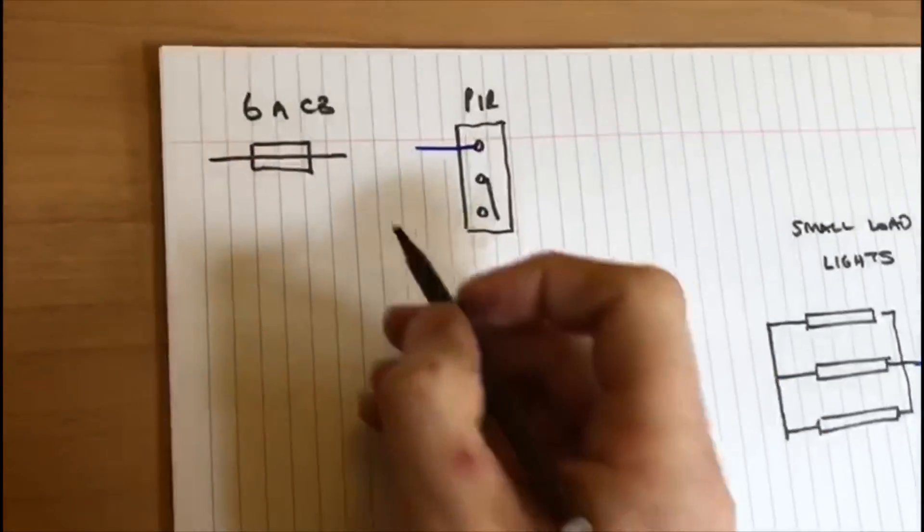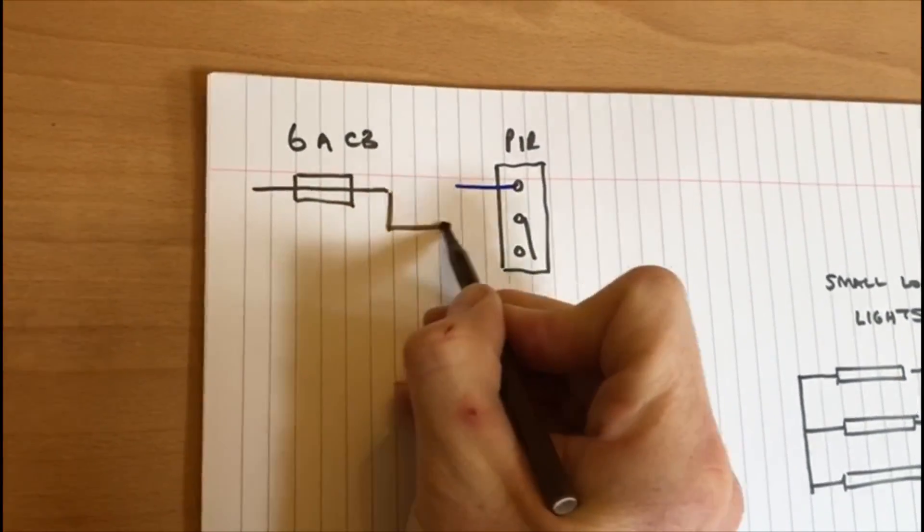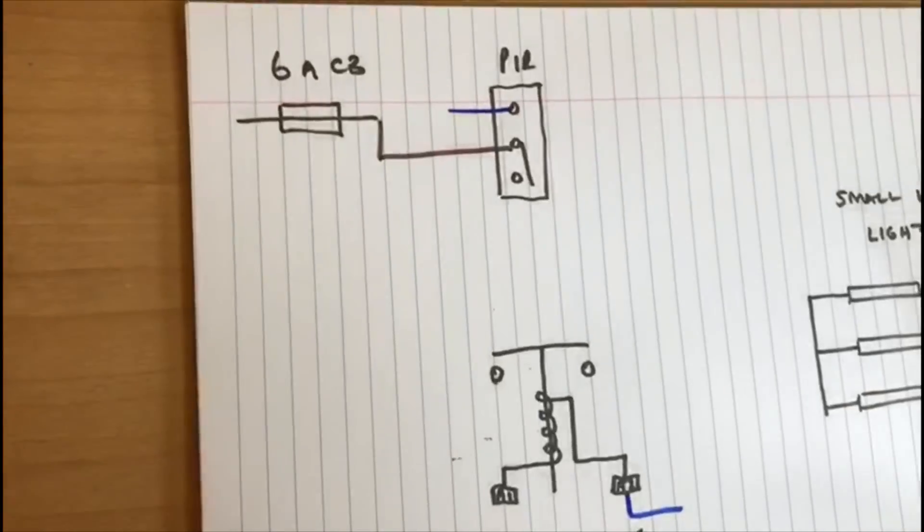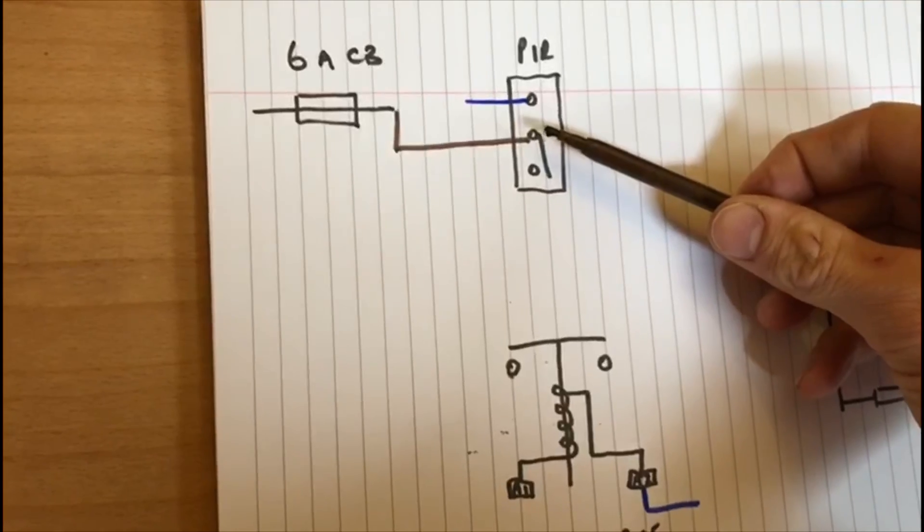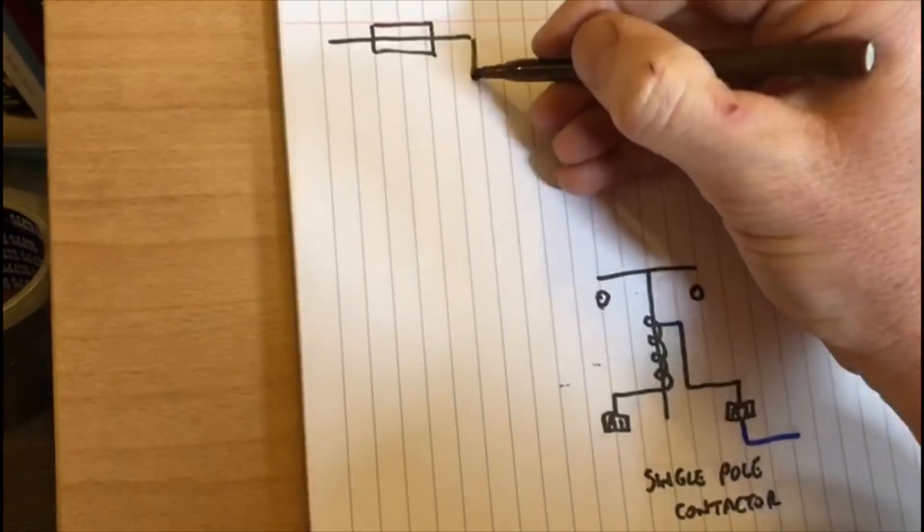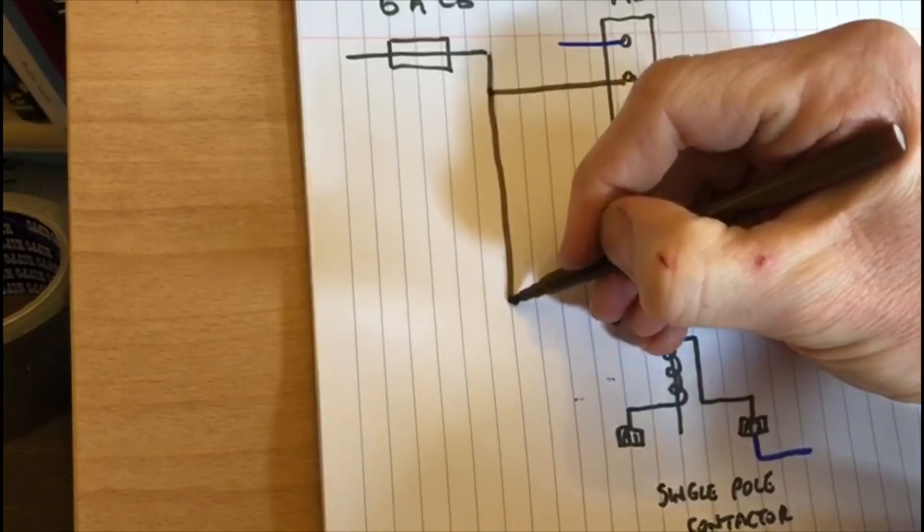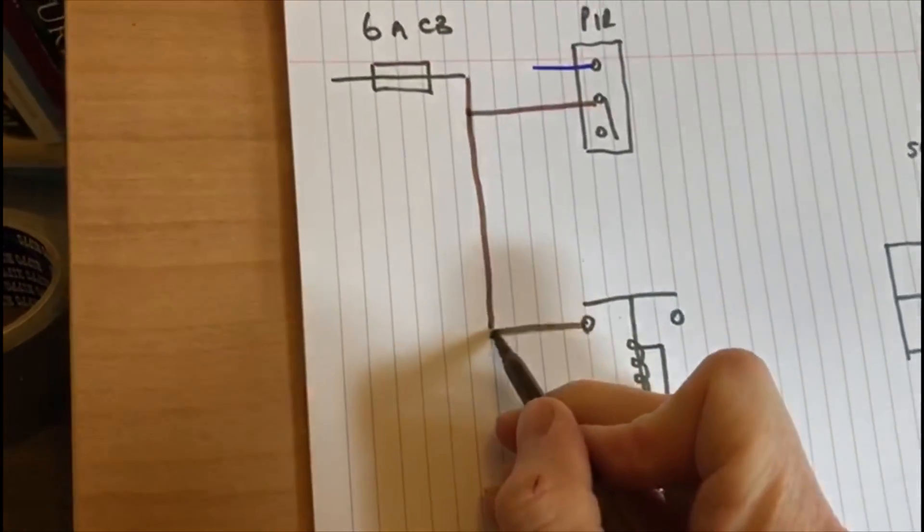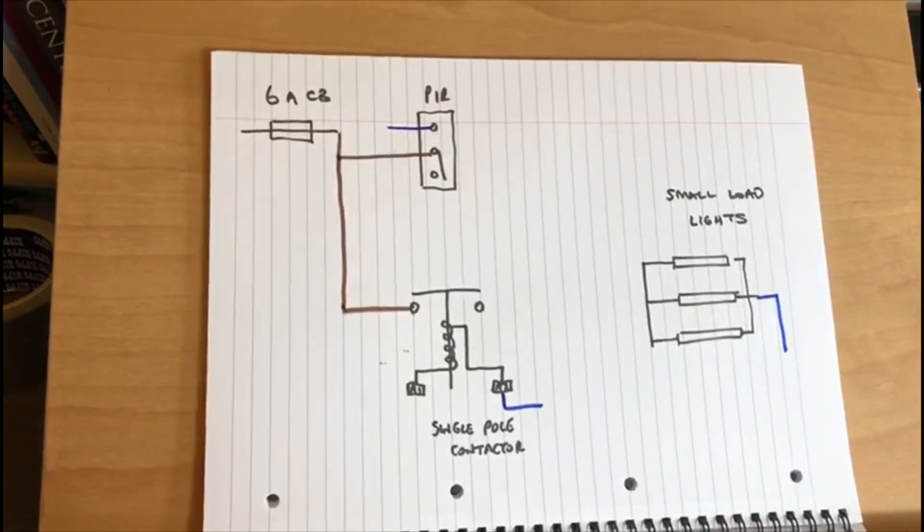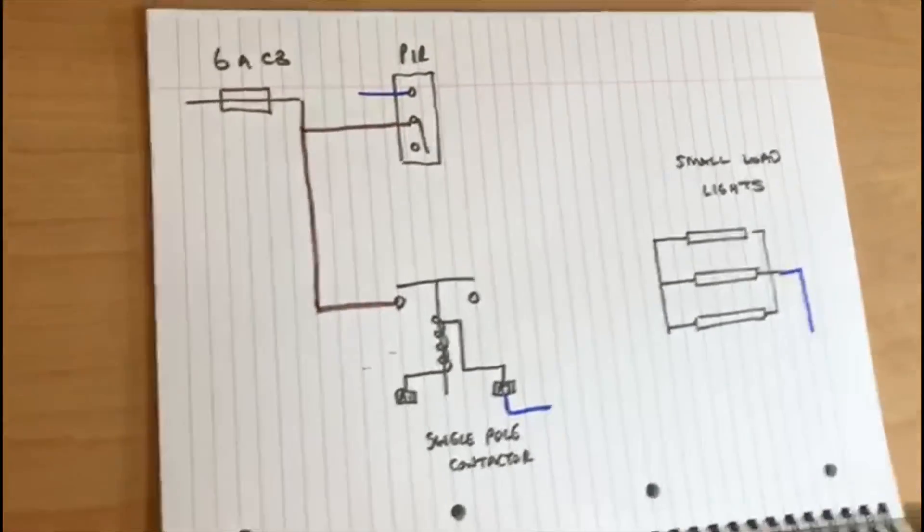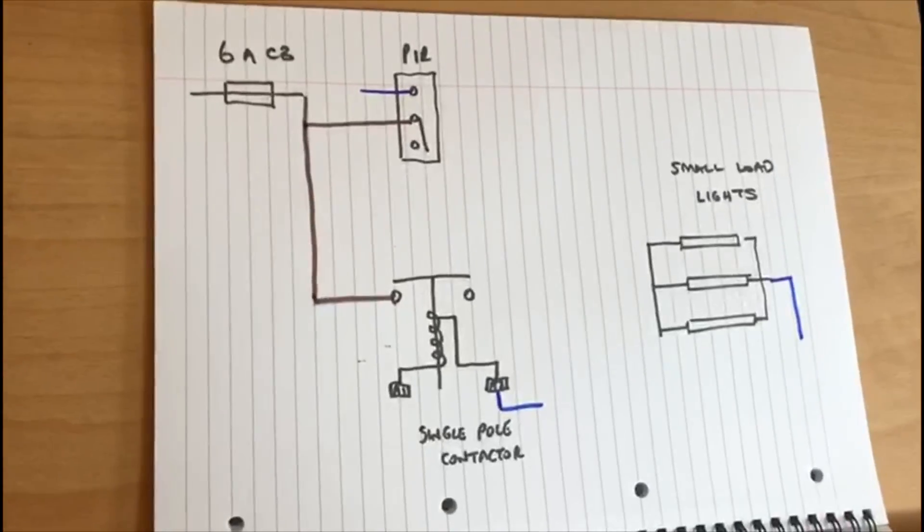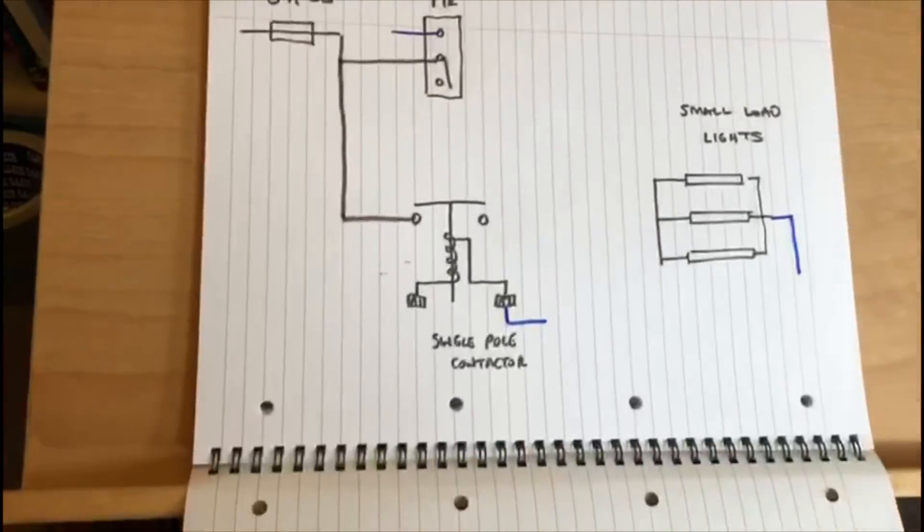So from the circuit breaker, we're going to take a live feed directly across to the PIR, so at no point is the live feed interrupted there. And also we're going to take another live feed directly to the contactor. Now this isn't a preferred method of mine to use—I prefer to use two circuit breakers—but this method does work as well, so we'll go through this one first.